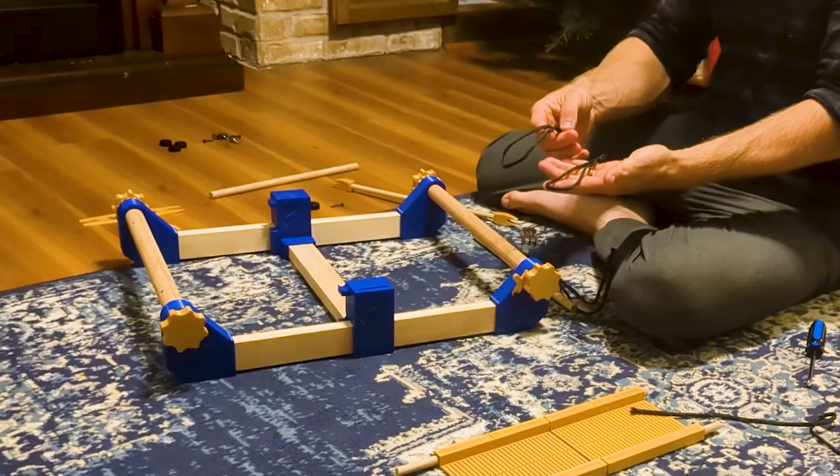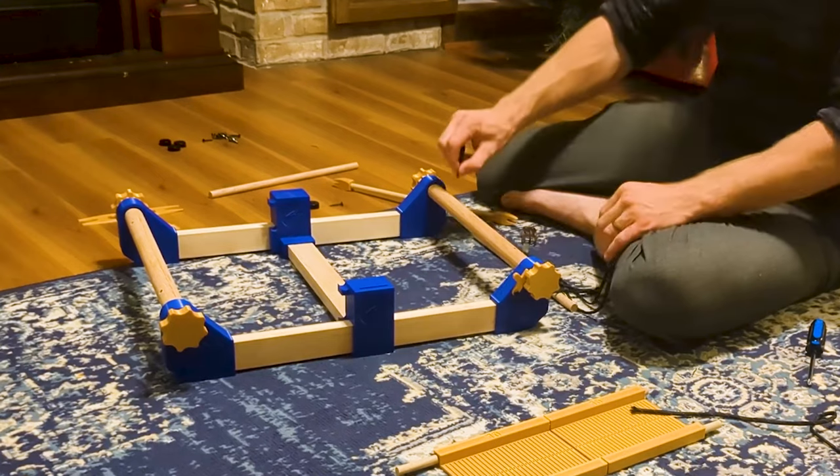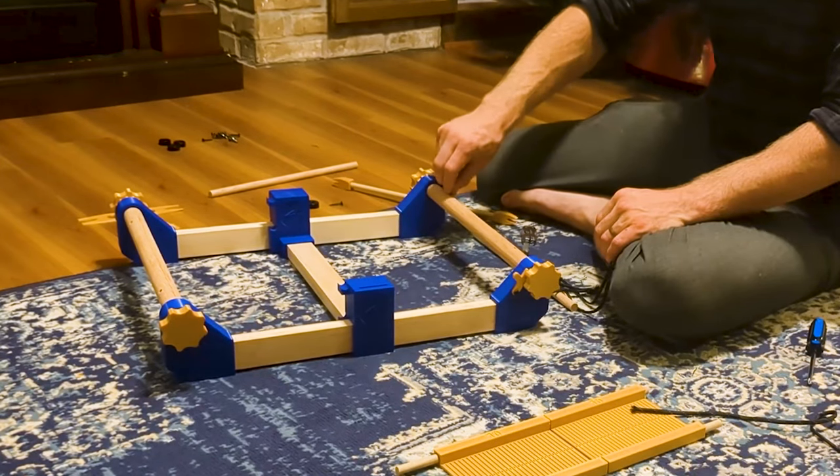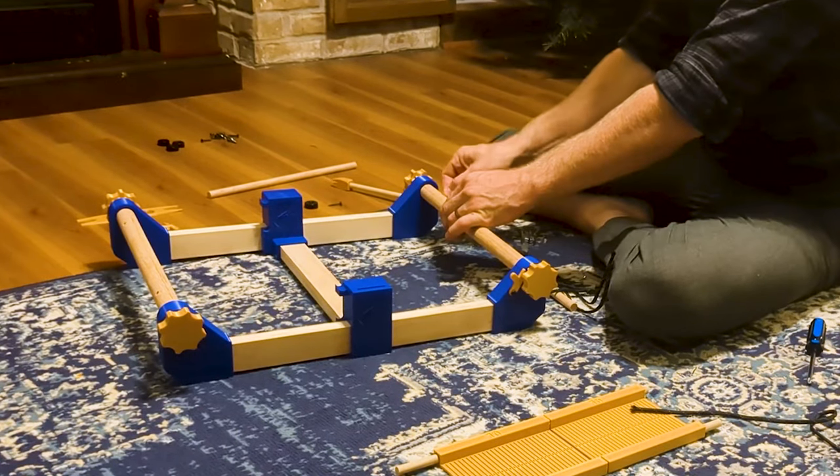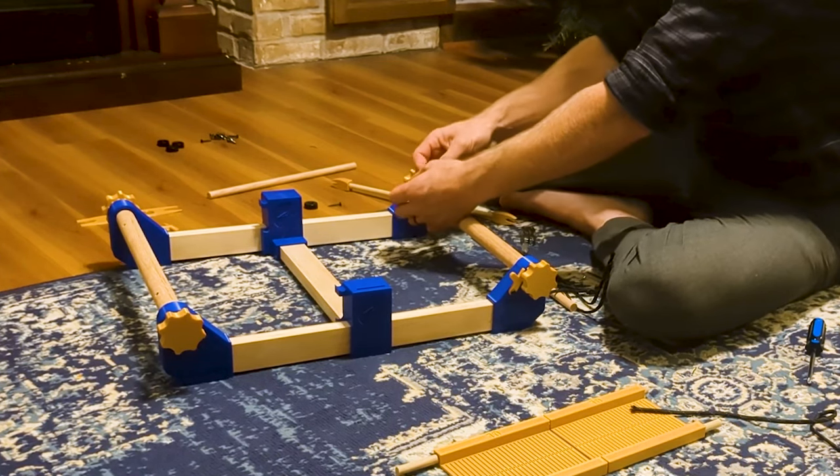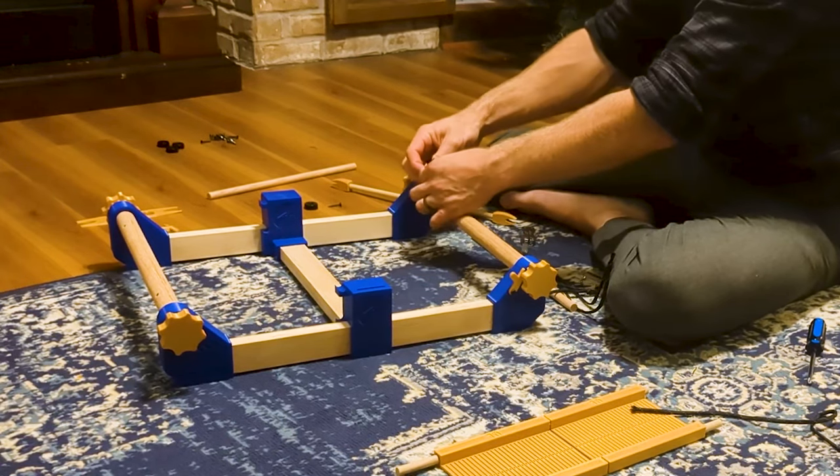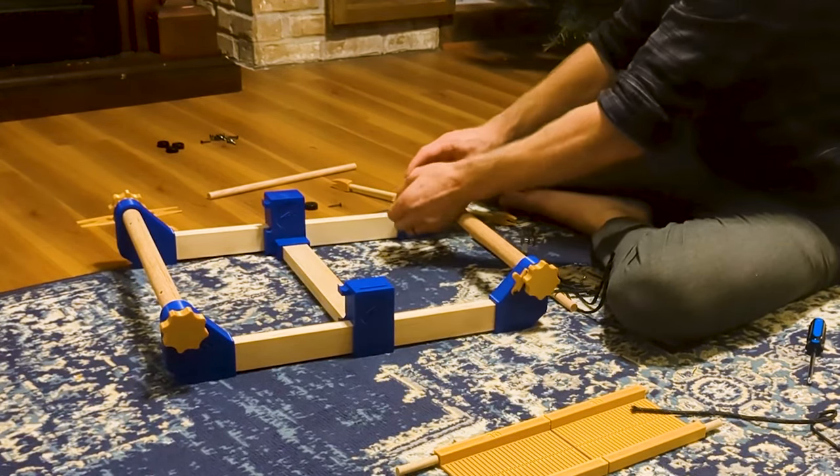I've gone ahead and made two loops, these are the same size, and what I'm going to do is press them through the holes in the beam. They say you can't push a string, I beg to differ. It takes patience, but it can be done. And then once it's emerged from the other side, I'm going to pass one end of this loop through the other end to make a simple knot.